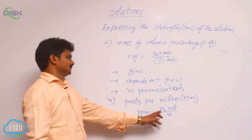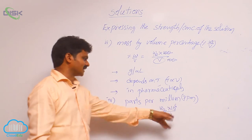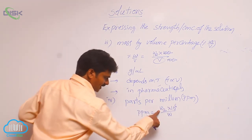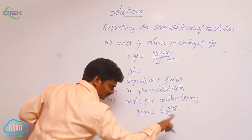So, here 10 power 6, why it is taken here? Million means 10 power 6. That is why. Here, W2 is the weight of the solute. Capital W is the sum of weights of solute plus solvent.